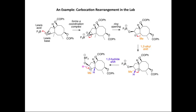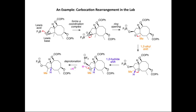Next, we get a 1,2-hydride shift: the hydrogen atom on the neighboring carbon moves across, and we form another tertiary carbocation. Regarding stereochemistry, the hydrogen is on the top of the molecule in the starting carbocation and remains on the top of the molecule in the product. We then lose a proton to form a carbon-carbon double bond.